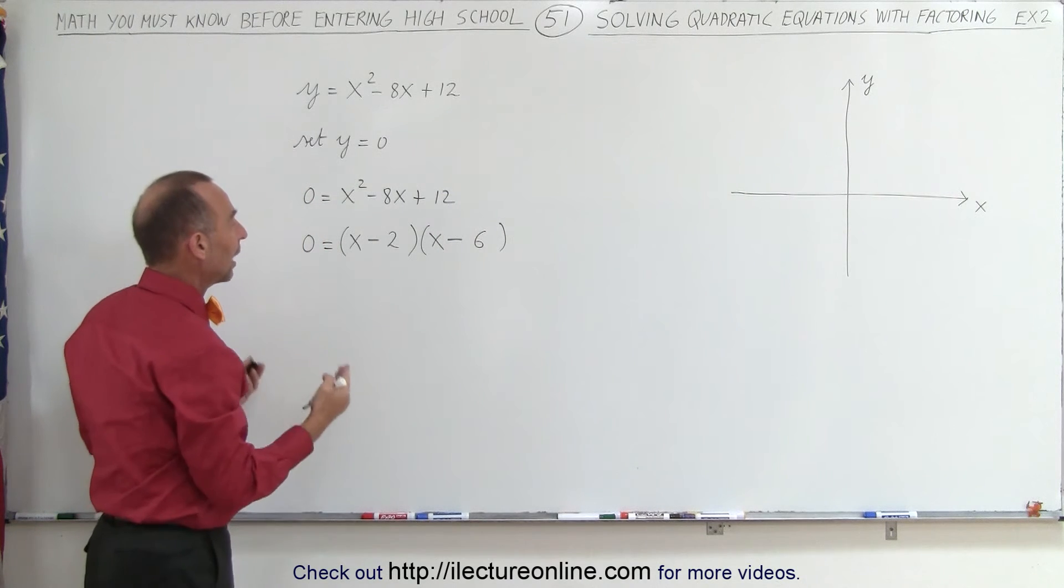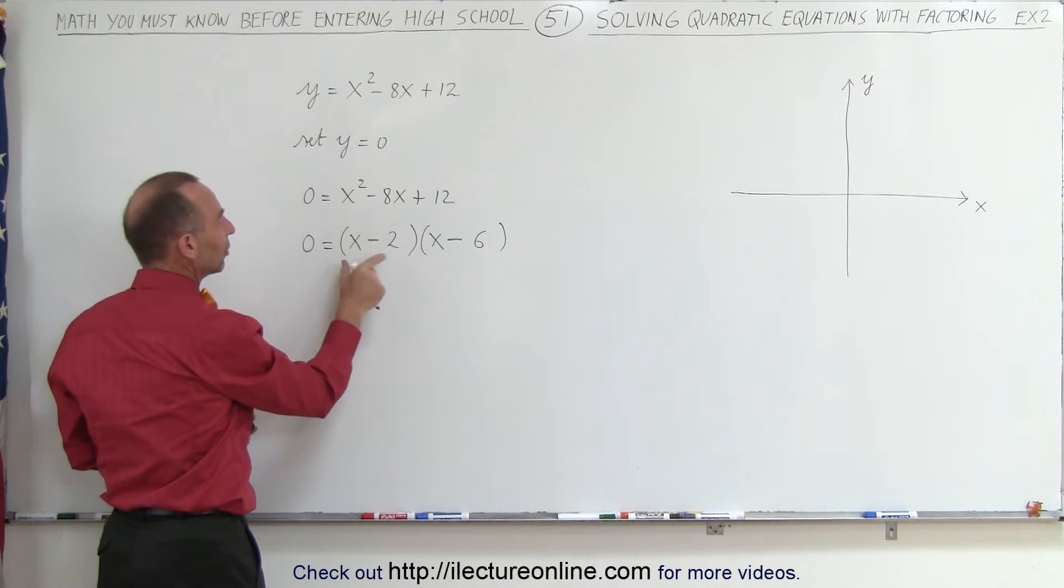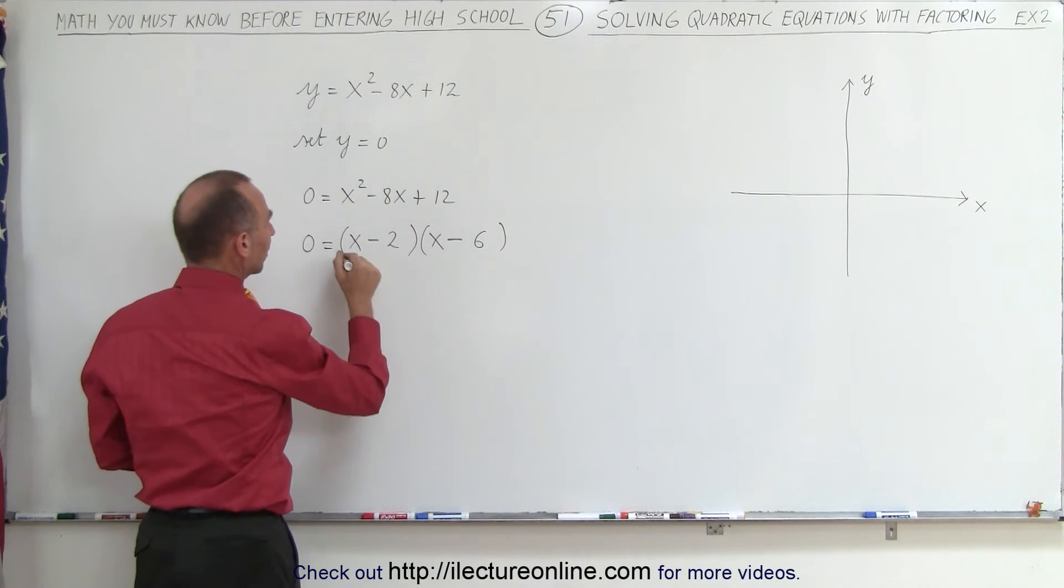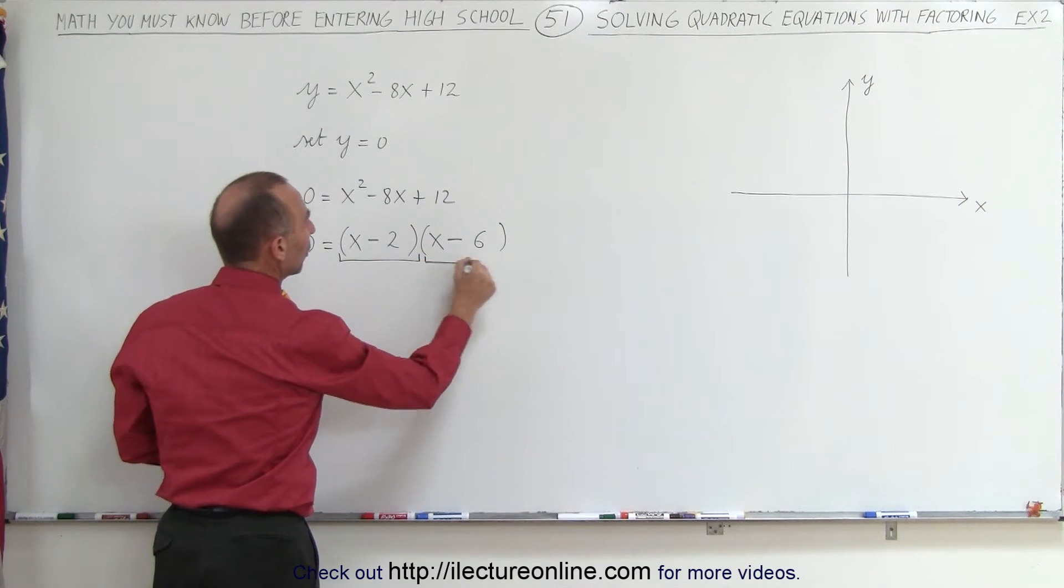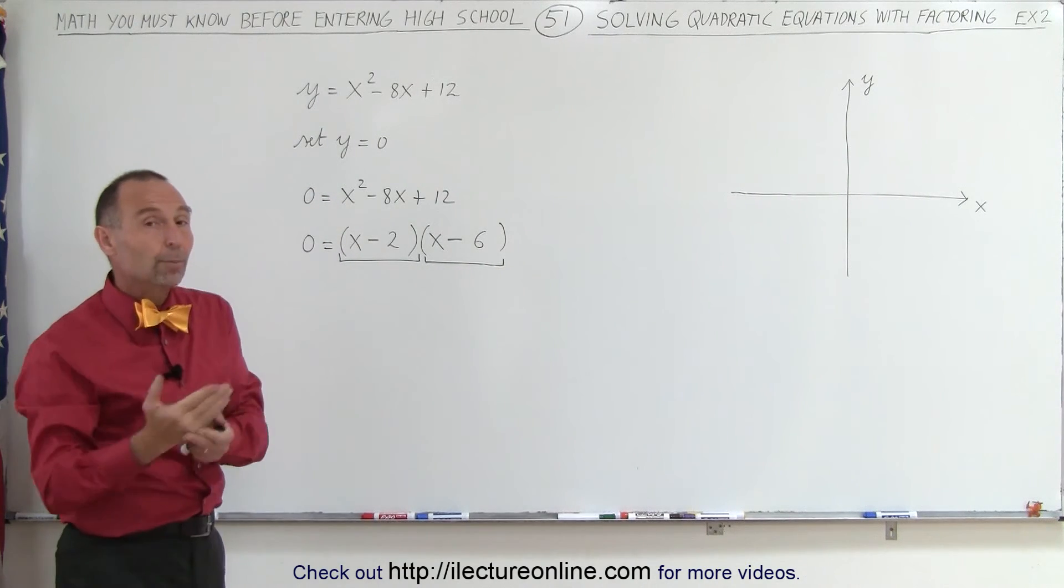So, that would now allow us to find x. So, now we can say that 0 is equal to this times this, the product of these two binomials. Well, for a product to be equal to 0, one or the other must equal 0.